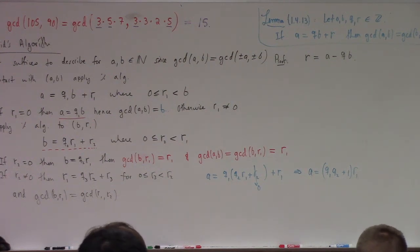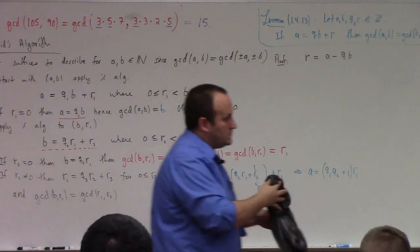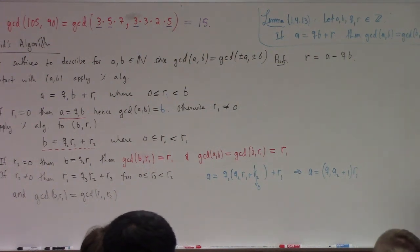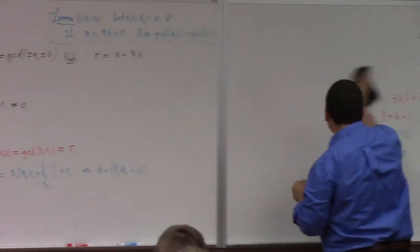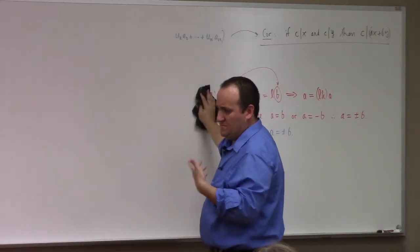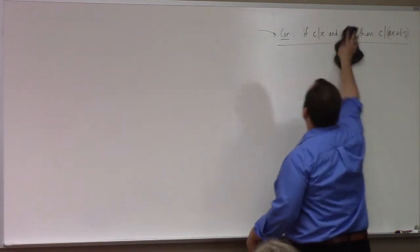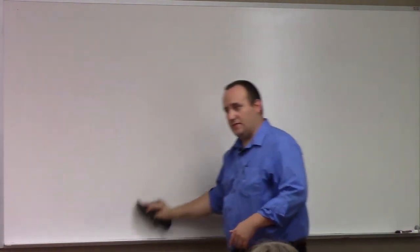How do I know that eventually you get zero — that this can't go on forever? The remainders are always smaller — they're strictly decreasing. R₁ is greater than R₂, R₂ is greater than R₃, and R₁ is bounded above by B. So there are at most B steps if B is positive.